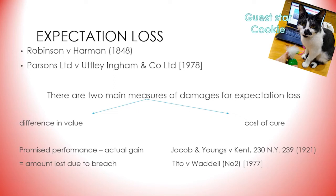There are two main measures of damages for expectation loss: difference in value and the cost of cure. A common way to calculate the loss is to determine what the party would earn from the performance of the contract if it had been performed as promised, and deducting what the party actually got — promised performance minus actual gain equals the amount lost due to the breach. Remember that the starting point is that compensation will cover the minimum obligation undertaken — you will receive damages for the minimum gain you would have made out of the contract, not for the eventuality that you might be fantastically successful.